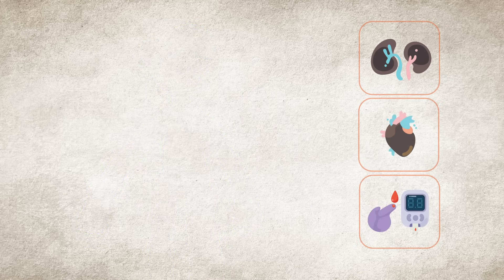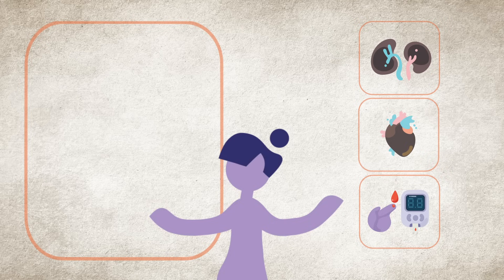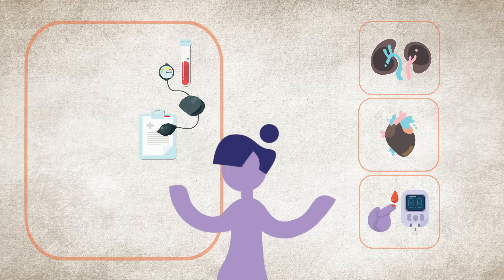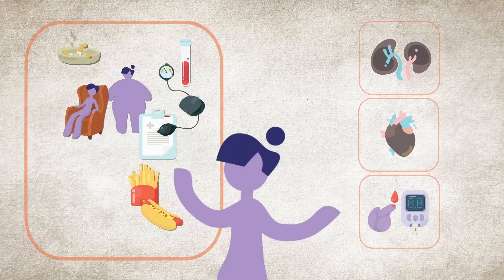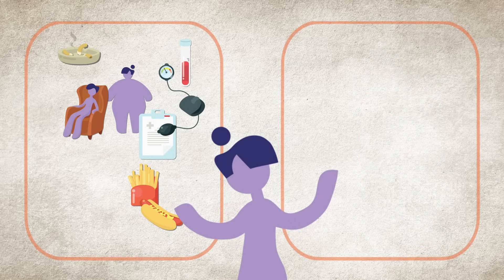Those illnesses share many of the same risk factors, such as family history, high cholesterol, high blood pressure, smoking, physical inactivity, obesity, and an unhealthy diet. Preventing or managing one condition can help prevent or manage the other conditions.